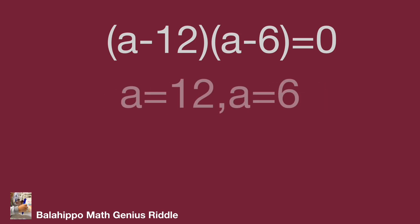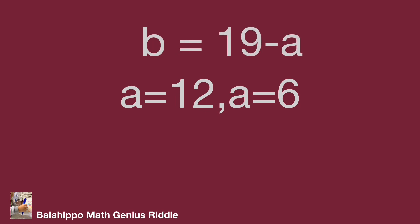So a = 12 and a = 6. Substitute a by 12 and 6 into the equation b = 19 - a. Got b = 7 or b = 14.